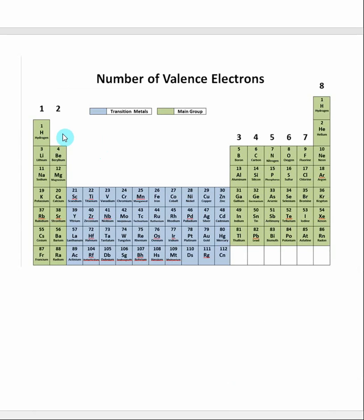What you do is you count left to right on the periodic table and you add one for each column and you jump over the transition metals.